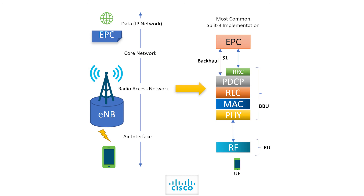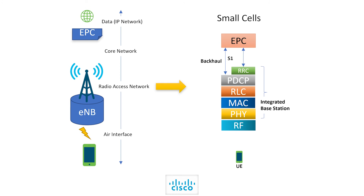Let us start with the most common split implementation of a traditional LTE network. Here all the baseband processing functions — RRC, PDCP, RLC, MAC, PHY — reside inside a physical or virtual BBU and the RF is seated in a radio unit or radio head. If we move to a small cell deployment or a backhaul use case, the deployment is in the form of an integrated base station where the DU and RU reside on the same unit. All RF and baseband processing functions sit in that RDU at the small cell site.